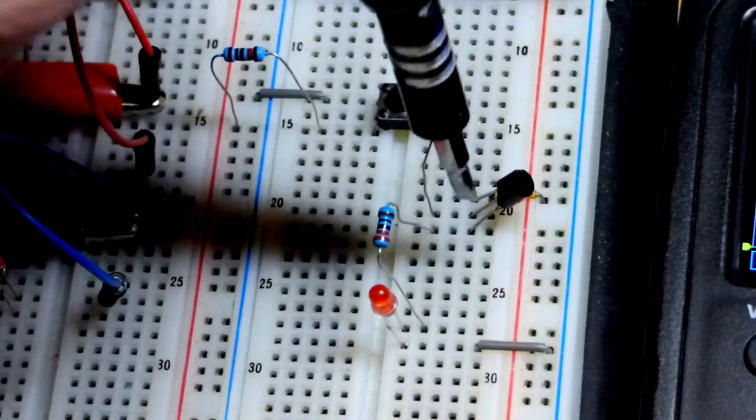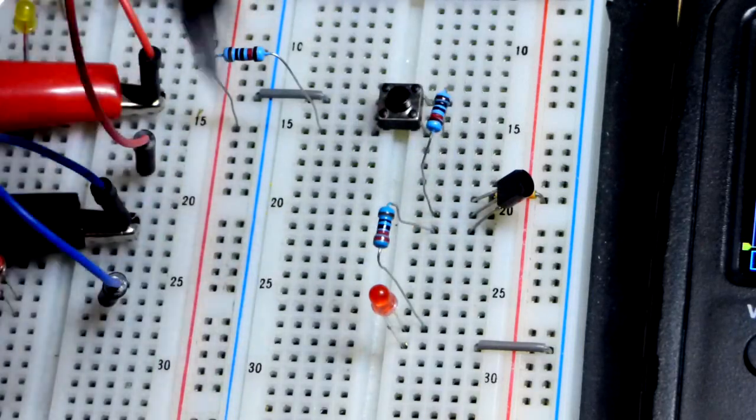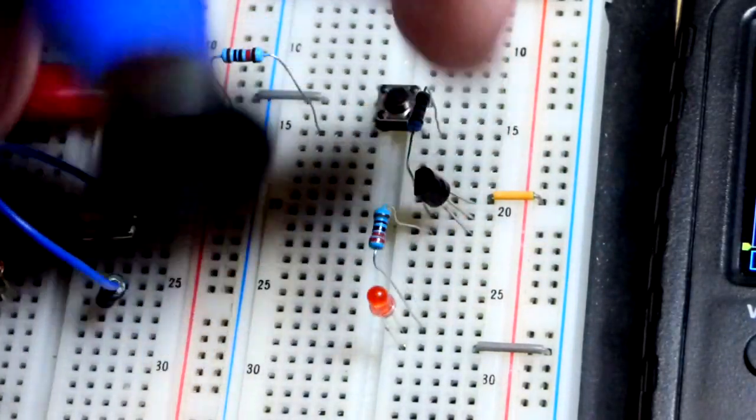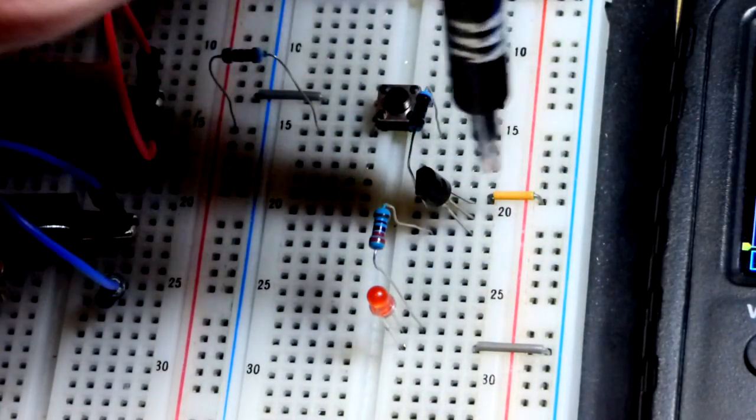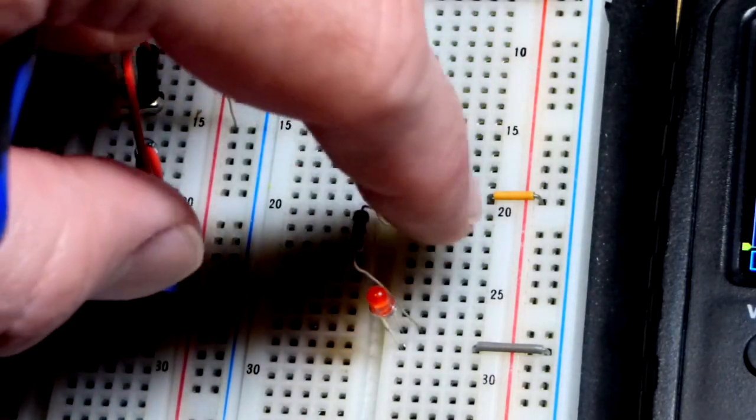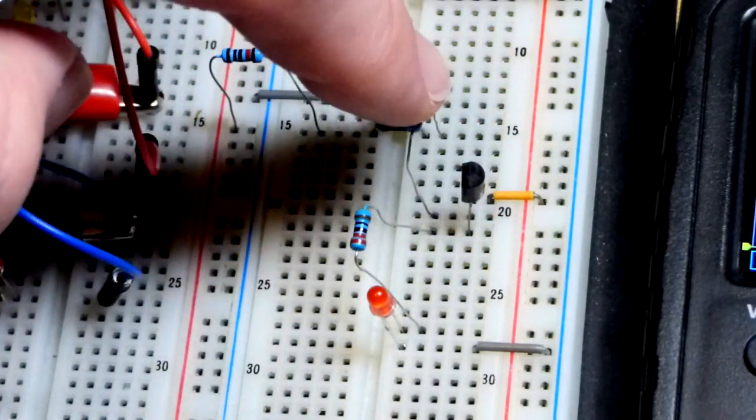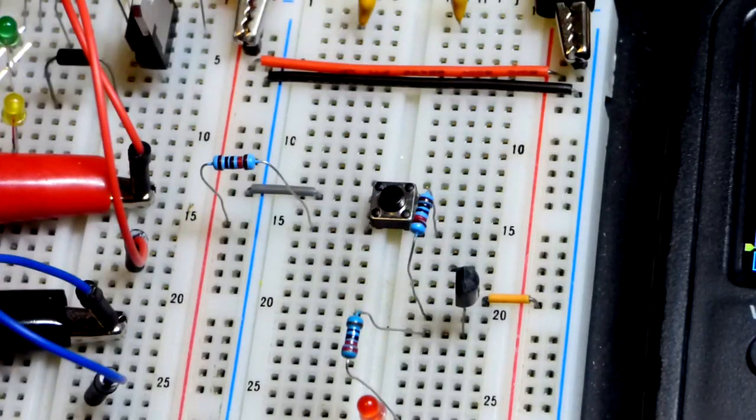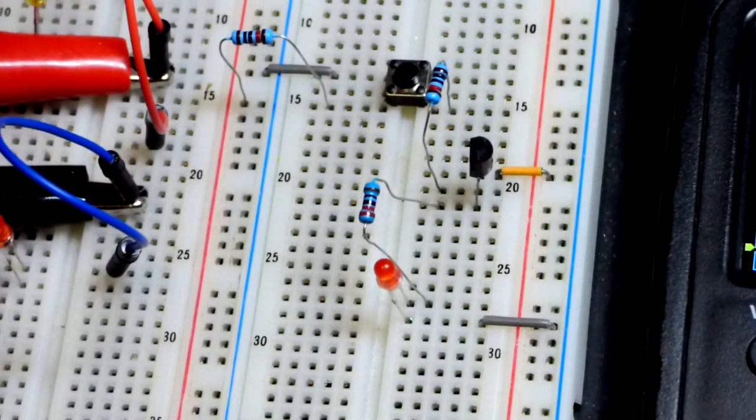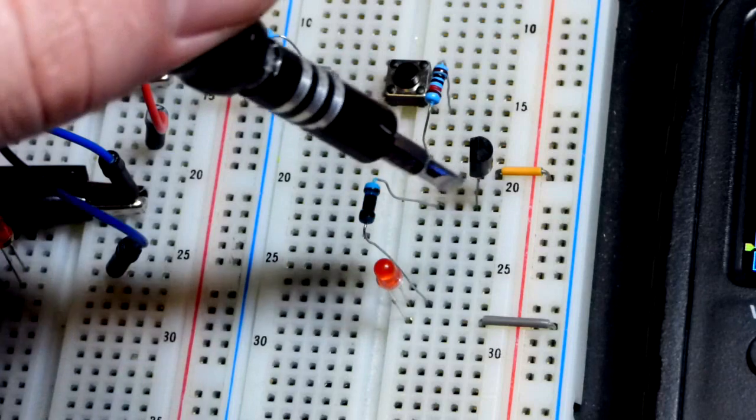That's a connection that's coming to the base, the middle pin of the PNP bipolar junction transistor. So emitter, the flat side's here, emitter on top, base in the middle, collector at the bottom. And the emitter at the top there is connected to the positive supply. That's a 10 kilo ohm resistor up there.